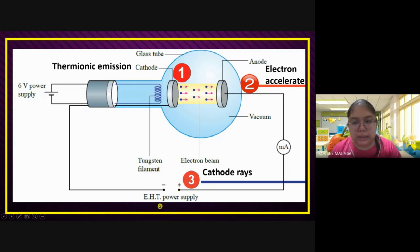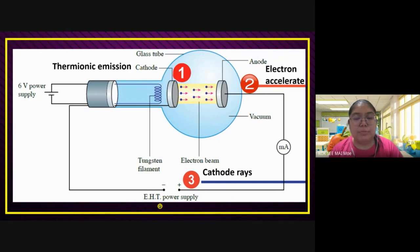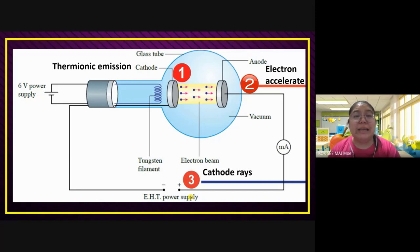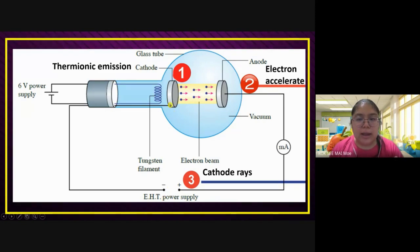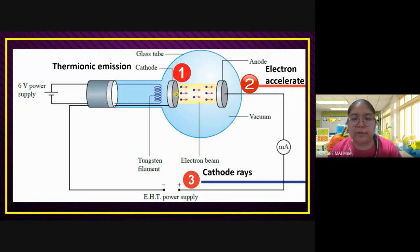EHT stands for extra high tension. Extra high tension means the voltage is higher than six volts — normally using kilo to calculate, three kilowatts, four kilowatts like this. So it joins with another power supply — an extra high tension for the cathode and also the anode. Now the electron has enough energy. They can accelerate from the cathode, go to the anode.